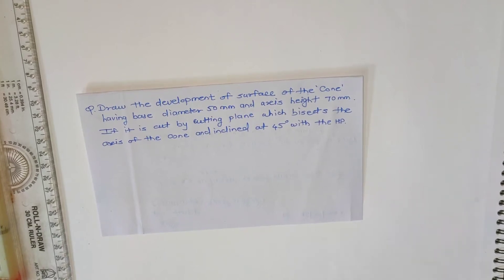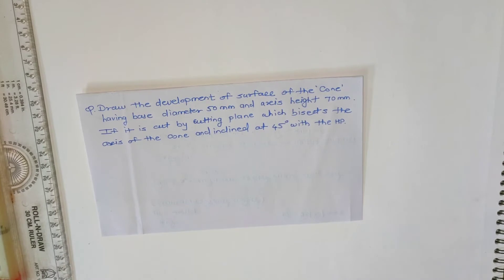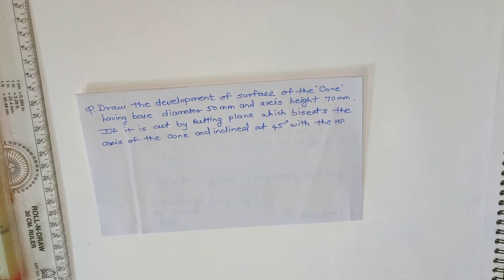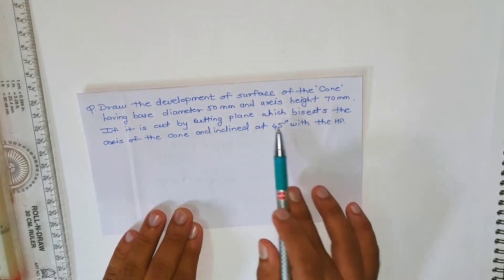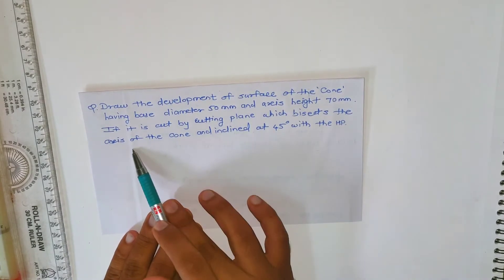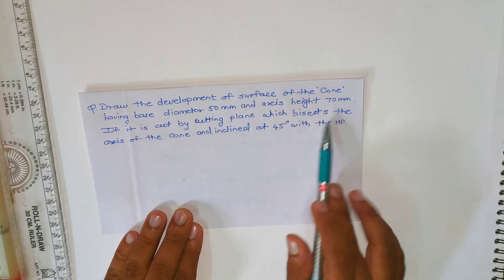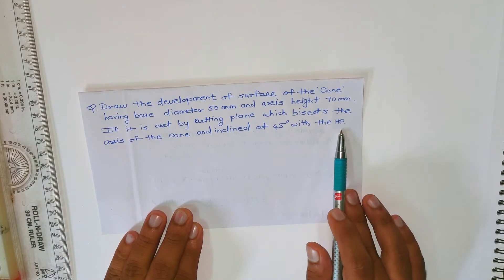Hi friends, in this video we see development of cone. Here we take one question: Draw the development of surface of the cone having base diameter 50mm and axis height 70mm. It is cut by a cutting plane which bisects the axis of the cone and is inclined at 45 degrees with HP. This is the cutting condition — the cutting plane bisects the axis and is inclined at 45 degrees with HP.